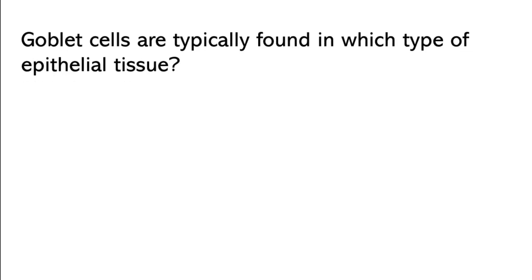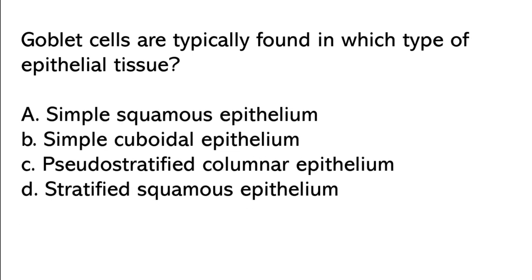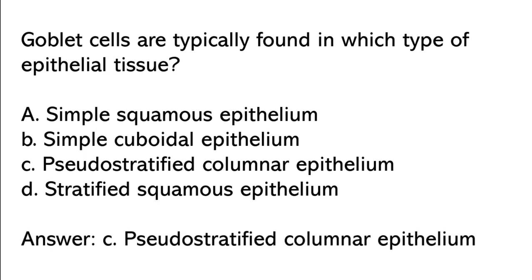Goblet cells are typically found in which type of epithelial tissue? Simple squamous, simple cuboidal, pseudostratified columnar, stratified squamous. So the correct answer is option C: Pseudostratified columnar epithelium.